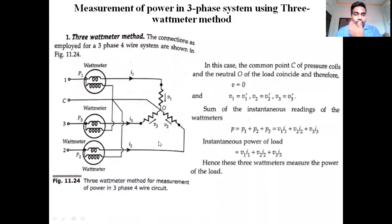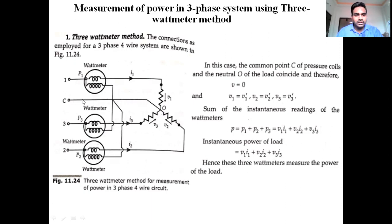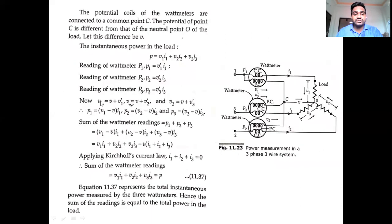But here, we connected the common point of the potential coil elements — the voltage elements — on the fourth wire, the neutral wire. This neutral point line is the neutral wire. On that neutral wire we connected the common point, which is why capital V equals zero.